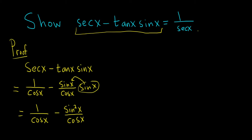Since the denominators are the same, we can perform the subtraction. This equals 1 minus sine squared over cosine x.